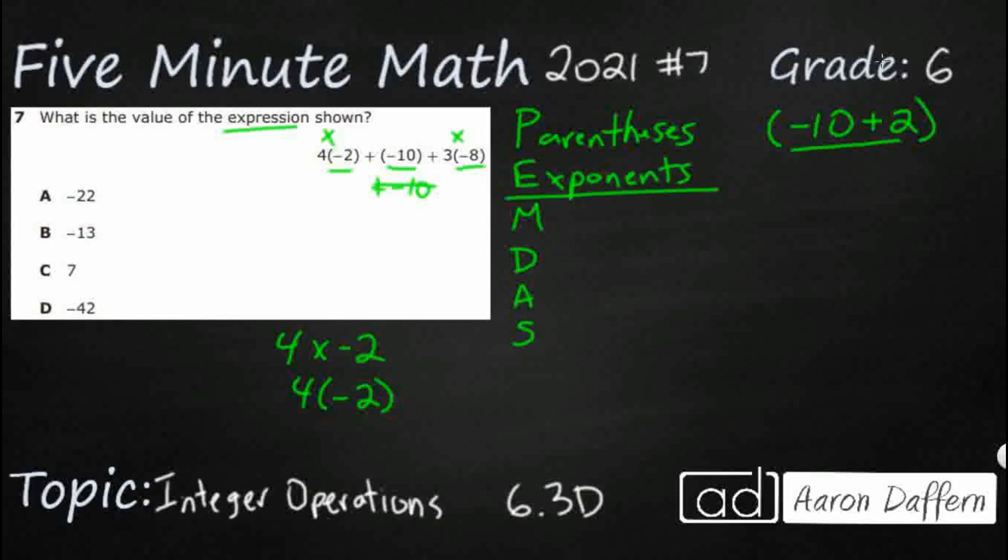Now we get to where we have our stuff. Multiplication and division. But you're noticing that I'm putting the lines above and below those two. That's because those two are grouped together. You can do either one first whenever it comes up left to right.